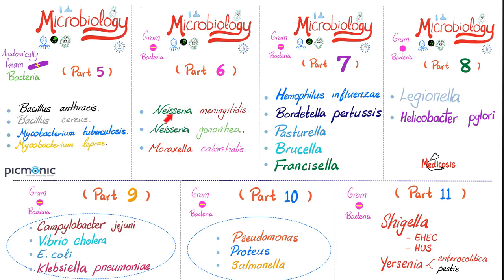Part 5 covered Bacillus anthracis, Bacillus cereus, Mycobacterium tuberculosis, and Mycobacterium leprae. Part 6 was about Neisseria meningitidis, Neisseria gonorrhoeae, and Moraxella catarrhalis. Part 7 was on Haemophilus influenzae, Bordetella pertussis, Pasteurella, Brucella, and Francisella. Part 8 was on Legionella and H. pylori. Part 9 was about Campylobacter jejuni, Vibrio cholerae, E. coli, and Klebsiella. In part 10, Pseudomonas, Proteus, and Salmonella. Part 11 was about Shigella and Yersinia.